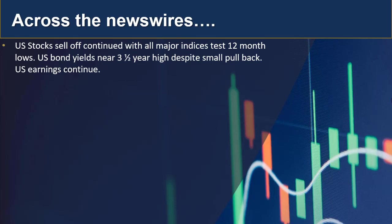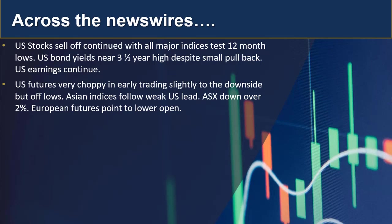Overnight we saw further sell-off in the US — all of the major indices looked very red and are testing 12-month lows. US bond yields did soften a little bit but are still near that three-and-a-half year high. US earnings continue today. So far US futures are very choppy in early trading, slightly to the downside. Asian indices are all following that weaker US lead, with the ASX down over 2% at this stage. European futures are not surprisingly pointed to a lower open.